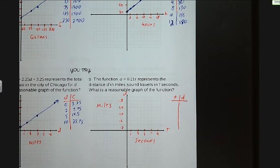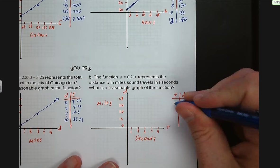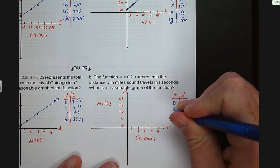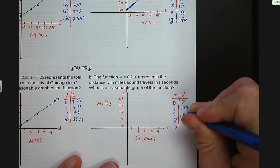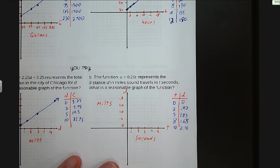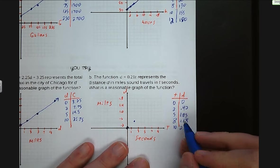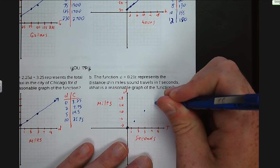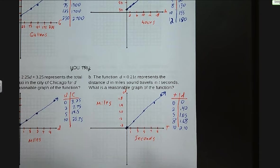Letter B — the function representing the distance in miles sound travels after t seconds. My scale is 1 to 10 for seconds and 0.2-mile increments for the y-axis. I use 0, 2, 5, 8, and 10 seconds, giving 0, 0.42, 1.05, 1.68, and 2.10 miles. We start at our origin, then plot each point. We're starting at our origin and going to infinity.